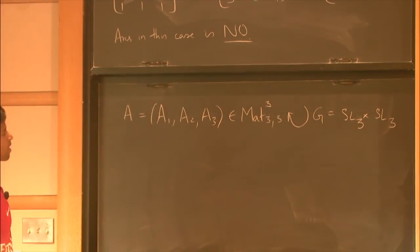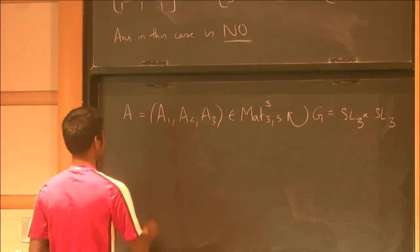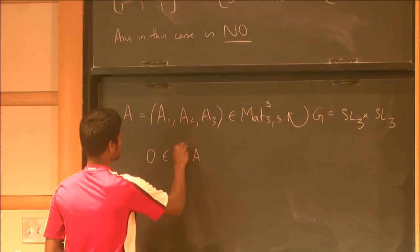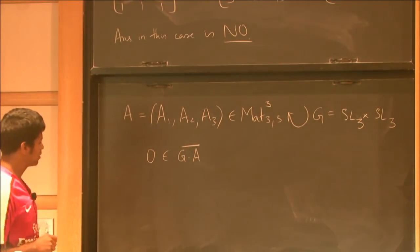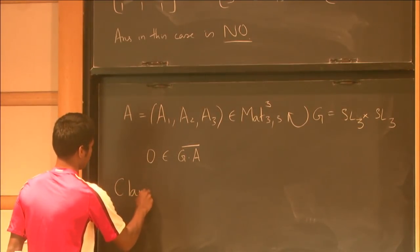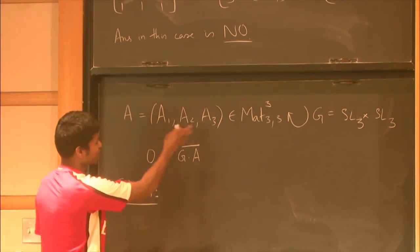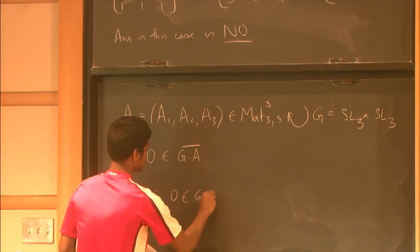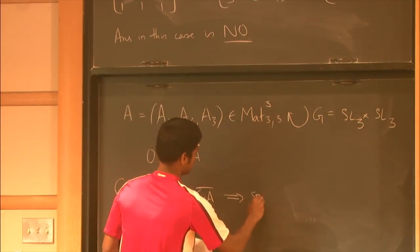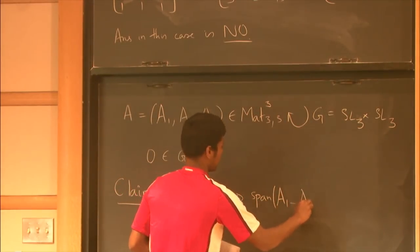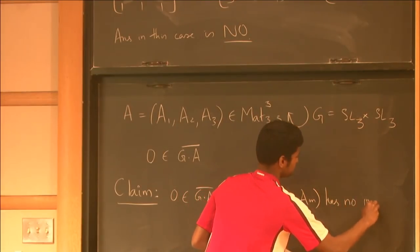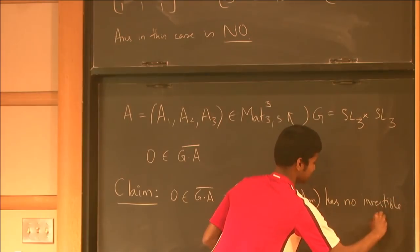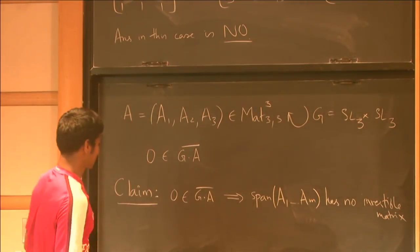And what did I do? I simply showed that you can take elements of this group, act it on this point, and drive it down to 0. It's just another way of saying that 0 belongs to the orbit closure. And so let me make this claim. And I'm going to make it in general. This becomes M and that becomes N. Not a problem. So 0 is in the orbit closure and that becomes SLN implies that the span has no invertible matrix. Do you agree with this? It's kind of the same statement, right? What about the converse?